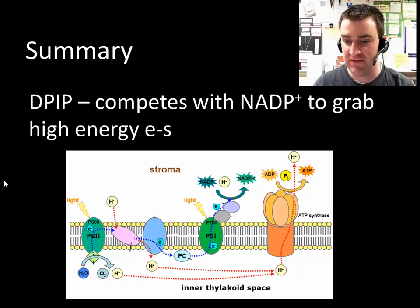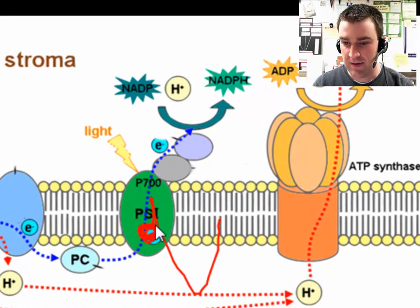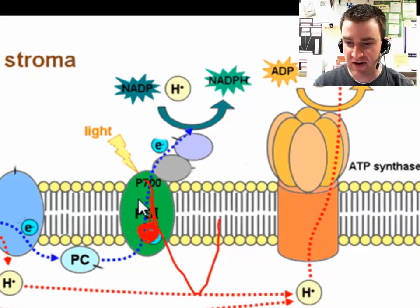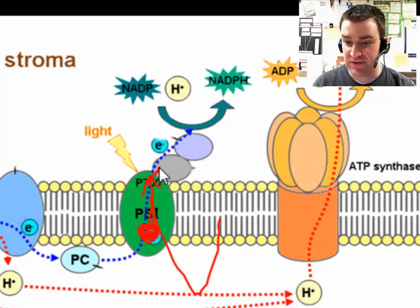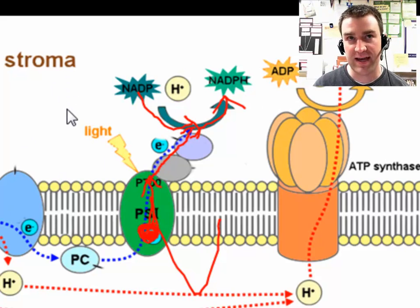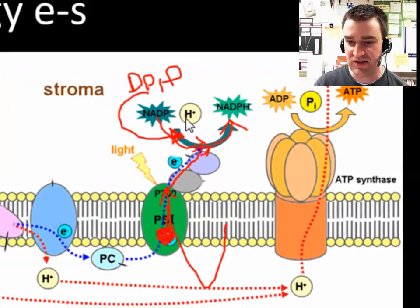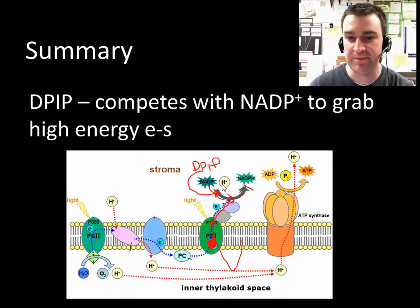We've discussed the role of the photosystems in creating high-energy electrons. The pigments are absorbing light energy and using it to boost high-energy electrons that are grabbed by the photosystem. We learned that the next photosystem might send them to be grabbed by NADP+, which eventually produces NADPH. So if we take these chloroplasts and surround them with a solution of DPIP, it can occasionally grab the high-energy electrons before NADP+ can.